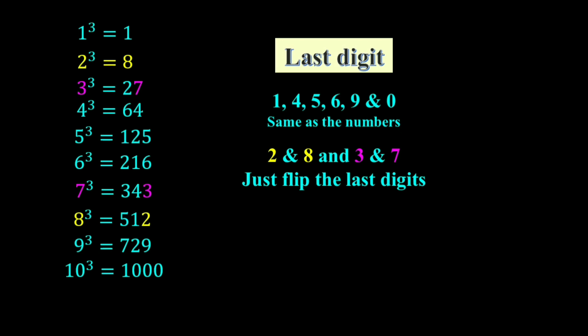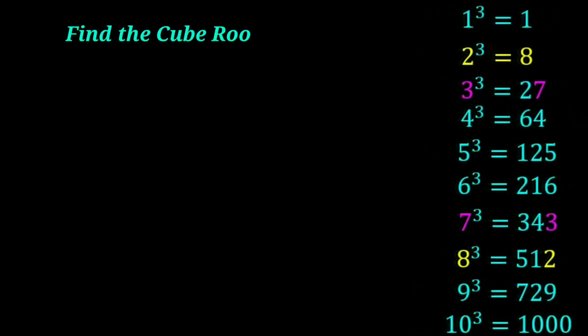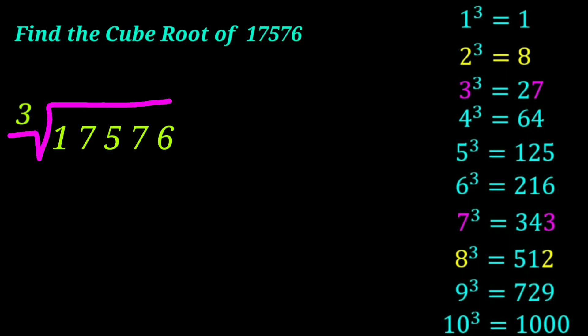Let's do the trick now. Find the cube root of 17,576. The first step is split into two parts. The last three digits as one, remaining digits as the other part.